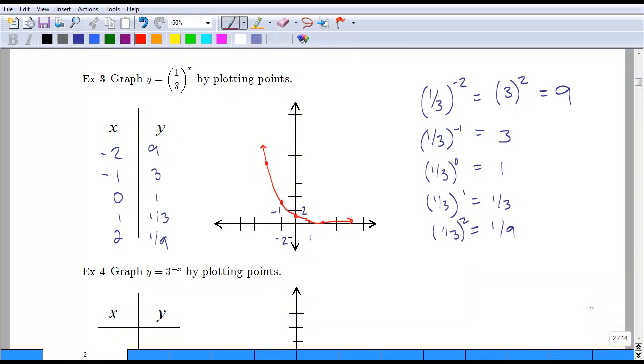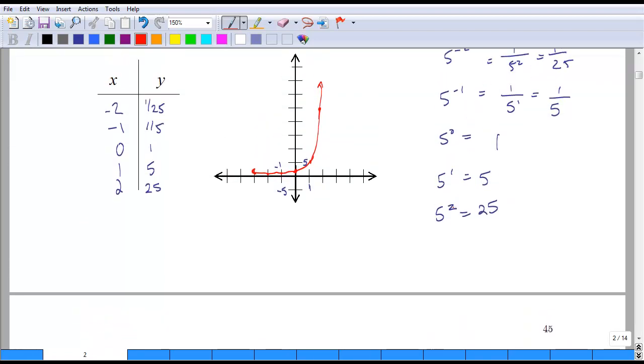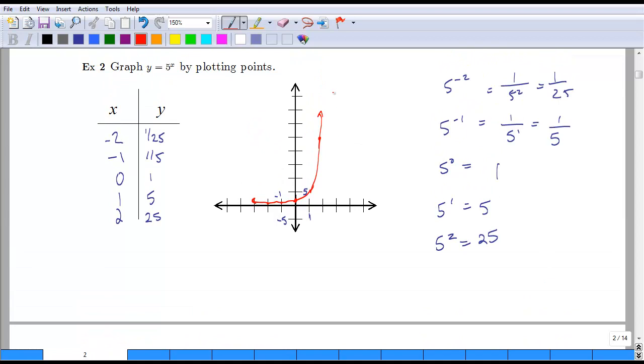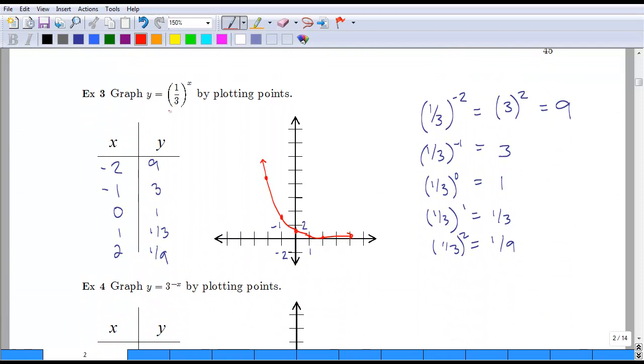For this example, you should have gotten the remaining values to be three, one, one-third, and one-ninth. So if you graph this function now, we start off very high, and then we decrease to kind of level out at zero. So if you can infer from this, if we have a base that is greater than one, then we're going to have this rapidly increasing function. If we have a base that is a fraction between zero and one, then this is going to rapidly decrease. It's going to start high, and then after we cross the y-axis, it is going to rapidly decrease.